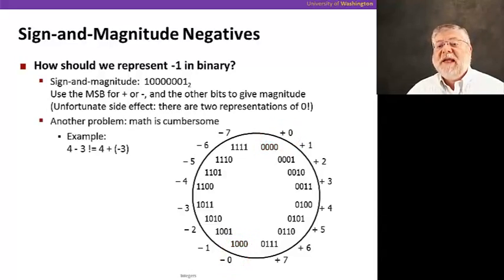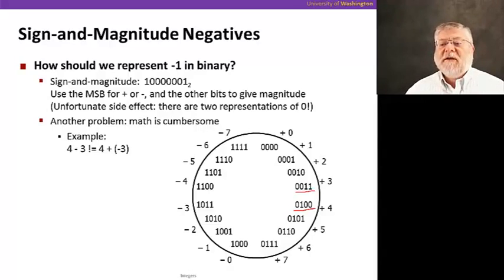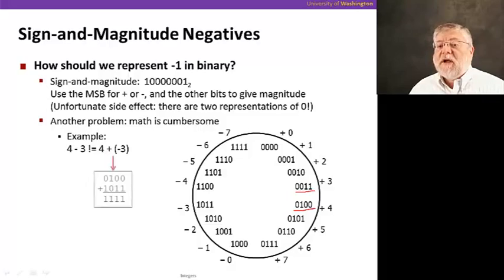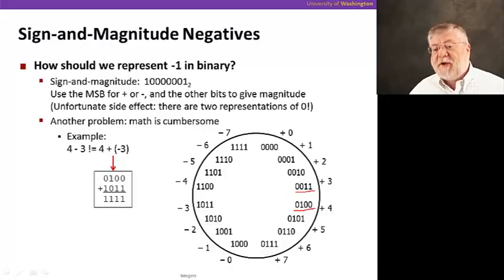The unfortunate side effect of this, as we've said, is that we have two values that correspond to zero — a negative zero and a positive zero. Why is this an issue? It makes math a little cumbersome. If I do four minus three, that corresponds to zero, one, zero, zero, minus zero, zero, one, one. The arithmetic shows the value is one. But if we look at four plus minus three, which should yield the same result, we see that in fact four plus a minus three yields minus seven. That's not the same as one. So we now have to worry about the order in which we do additions and subtractions, which is not something we want to deal with in our programming languages.